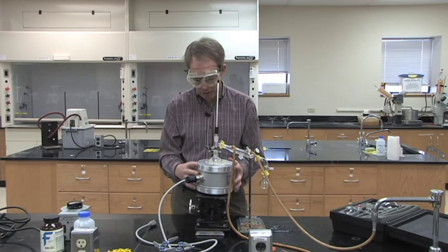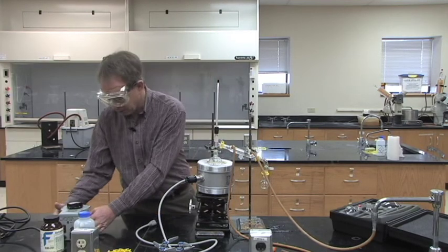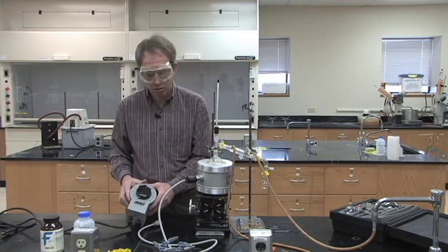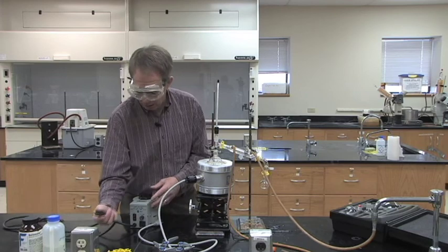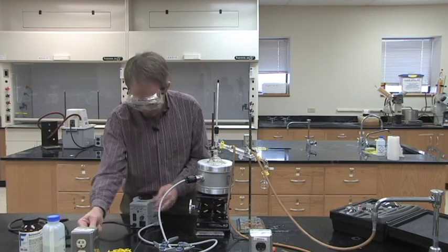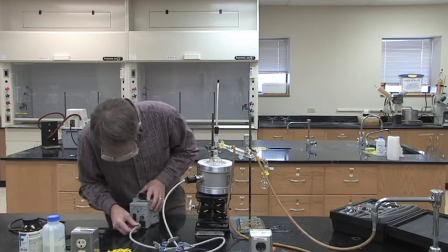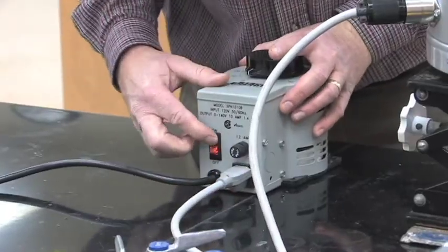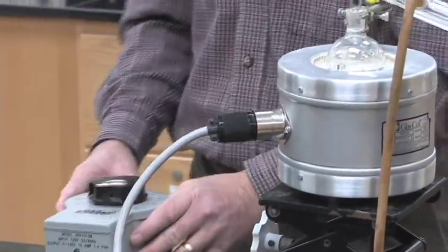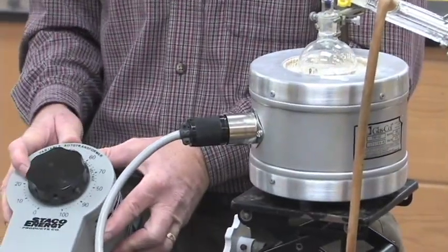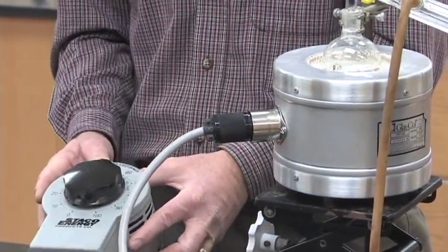Now the thermal well that we're using doesn't have a dial on it. So we have to go back to using a Variac to control the current in our thermal well. So we plug it into the standard wall outlet, plug our thermal well into it, turn it on, and then turn up the power to begin with somewhere in the 30 to 40 range and see what happens from there.